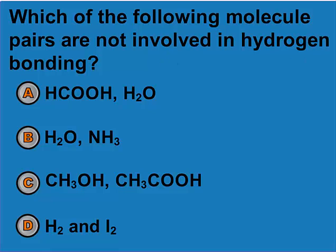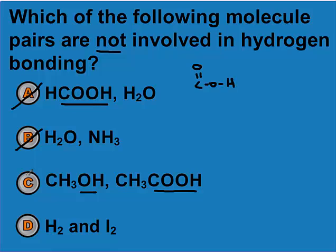We're looking for the molecules involved in hydrogen bonding. A molecule with –COOH (an organic acid) has O–H, so hydrogen is attached to oxygen — hydrogen bonding. Water is hydrogen bonded, as is any molecule with hydrogen attached to nitrogen. Organic acids and alcohols are also hydrogen bonded. A molecule with only H–H bonds is definitely not hydrogen bonded, and iodine doesn't even contain hydrogen.